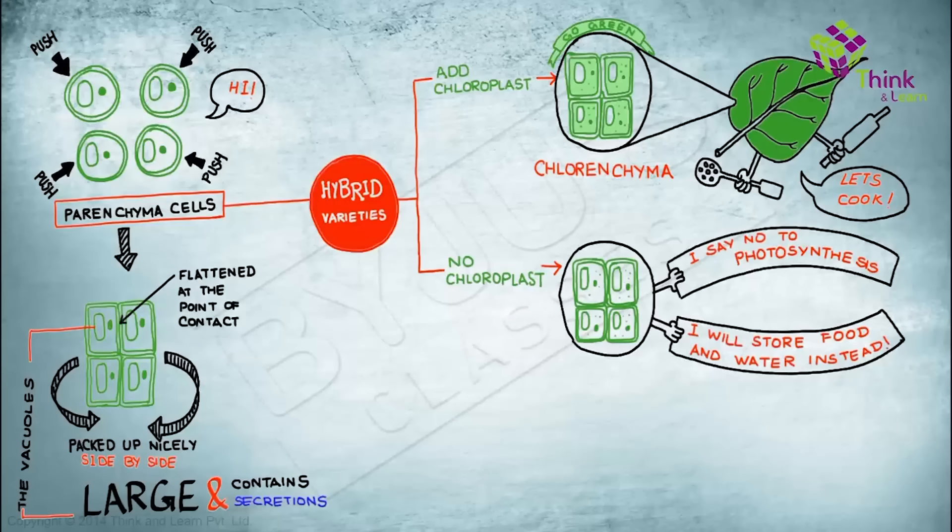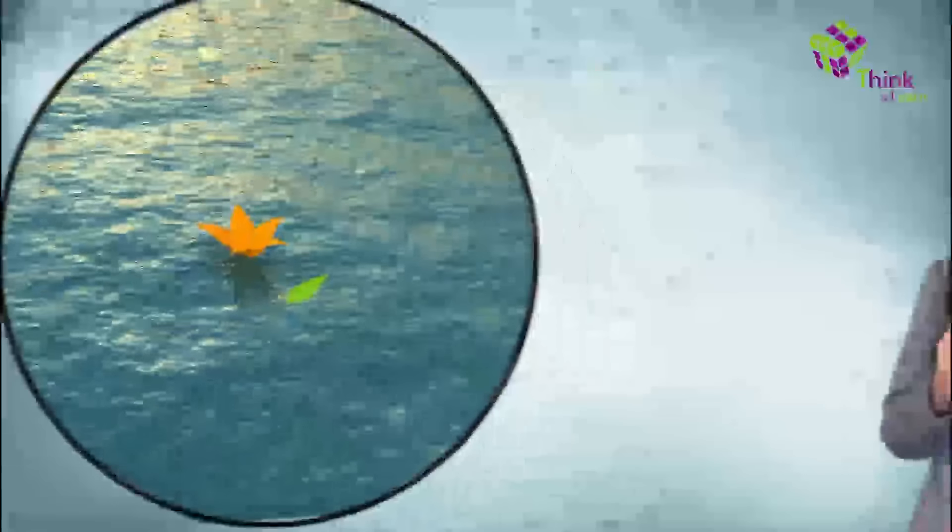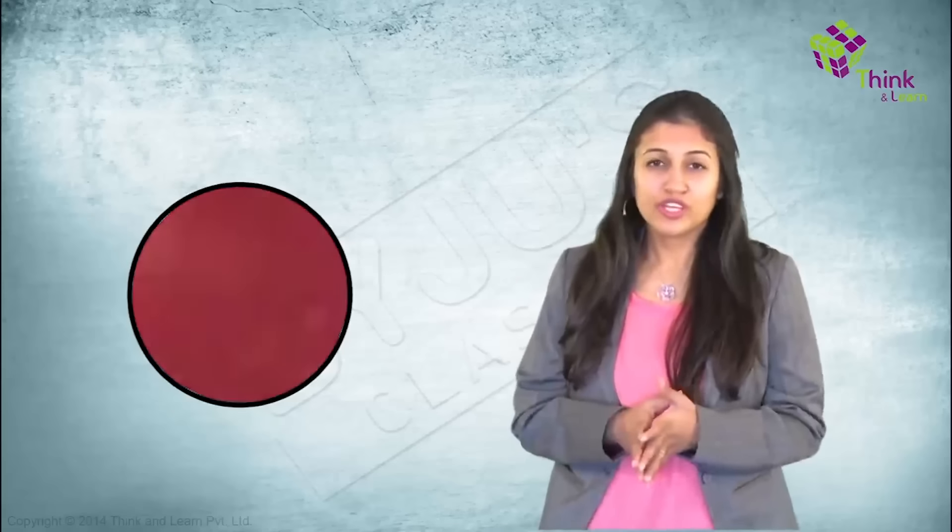When parenchyma cells are loosely packed together with some air spaces, it's got a nice name. Aerenchyma. It's found in water lilies and provides buoyancy and helps them float in water. Also, it gives the submerged parts of the plant access to a supply of air. Oh, and one more yummy thing about parenchyma, they are found in most of the edible portions of fruit. So if you look at parenchyma itself, there are so many avatars, right?